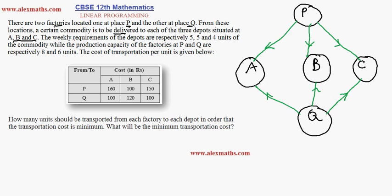The weekly requirements of the three depots are five, five, and four units respectively. The production capacity of the factories at P and Q are eight and six units. The cost of transportation is given in the table. The question is: how many units should be transported from each factory so that the transportation cost is minimum?